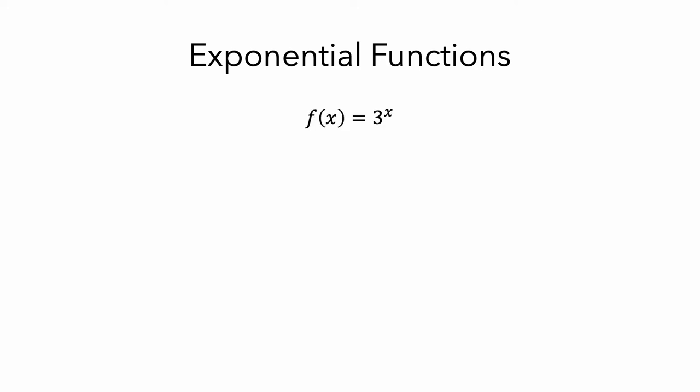An exponential function is where the output of the function is a number raised to the value of the input. For example, f equals 3 to the x is an exponential function. In contrast to a monomial, where the exponent is a number, an exponential function has the variable in the exponent. The number is called the base.